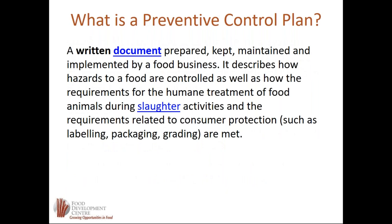Preventive control plans are the equivalent of a HACCP plan and a HACCP document. They are a written document prepared, maintained, and implemented by a food business.